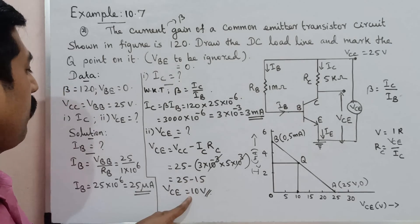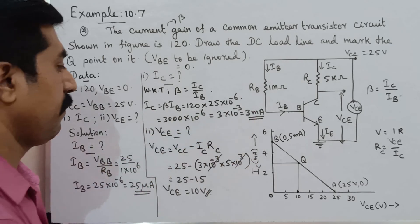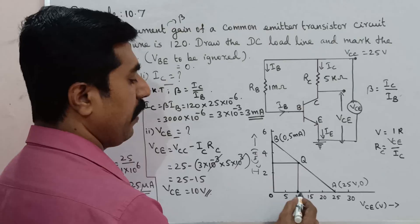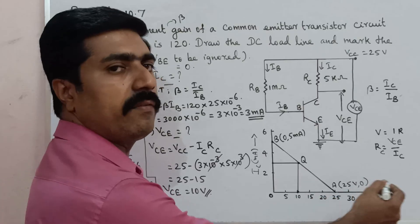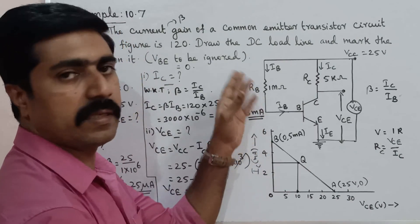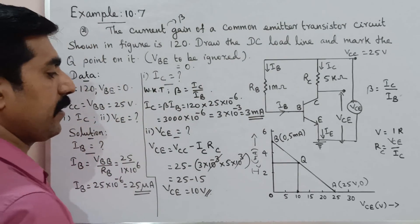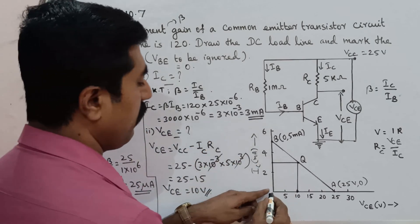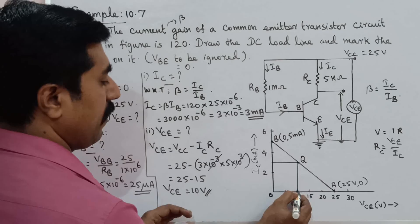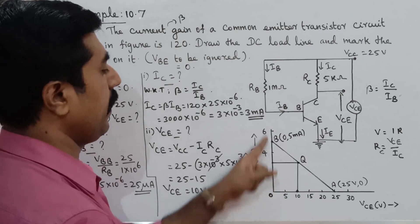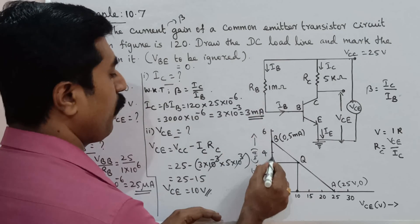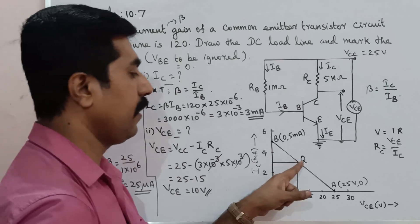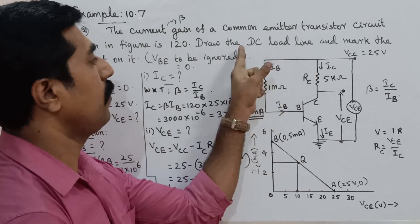So VCE equals 10 volts and IC equals 3 milliampere. On the graph, the X-axis has VC values: 5, 10, 15, 20, 25, 30, 35; and the Y-axis has IC values: 2, 4, 6, 8. The Q point is at VCE = 10V, IC = 3mA. For the DC load line: when VC = 25V, IC = 0; and when VC = 0, IC = 5 milliampere.